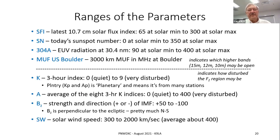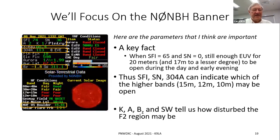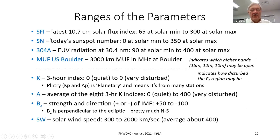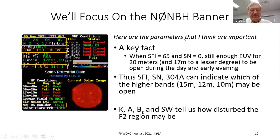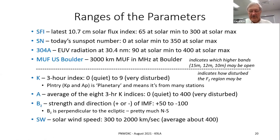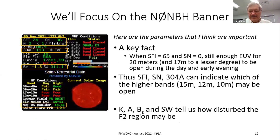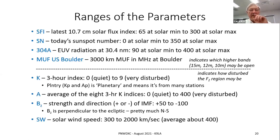From that banner, we see that the solar flux yesterday was 74 and the sunspot number was 36. That tells us we're much nearer solar minimum than solar maximum. The sunspot number goes from zero to about 350 at solar max, so a sunspot number of 36 says we're much closer to solar minimum than a big solar maximum.